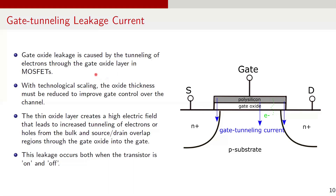Now let's talk about gate tunneling leakage current. Gate oxide leakage is caused by the tunneling of electrons through the thin gate oxide layer in MOSFETs. With each successive technology generation, the oxide thickness in MOSFETs must be reduced to mitigate short channel effects and to improve gate control over the channel. However, aggressive scaling of oxide thickness creates a high electric field in the channel, which leads to electrons and holes tunneling from the bulk and source-drain overlap region through the gate oxide potential barrier into the gate. This results in tunneling current. Unlike sub-threshold leakage, which happens only when the transistor is off or in weak inversion, gate oxide leakage occurs both when the transistor is on and off. When off, leakage flows through the overlap regions of source and drain; when on, it flows through the overlap regions and the transistor channel, making it generally higher.